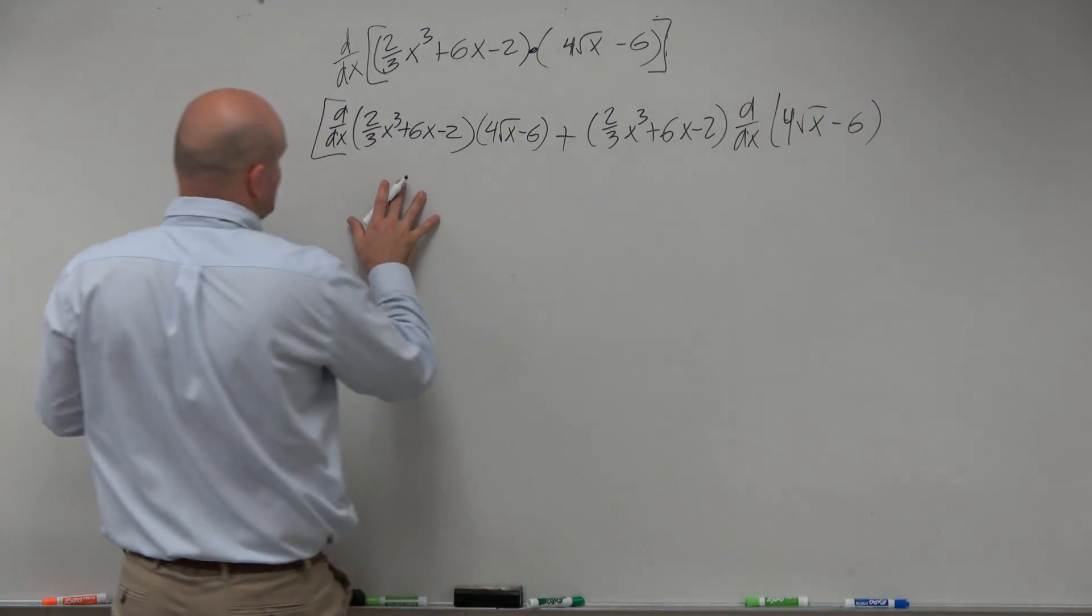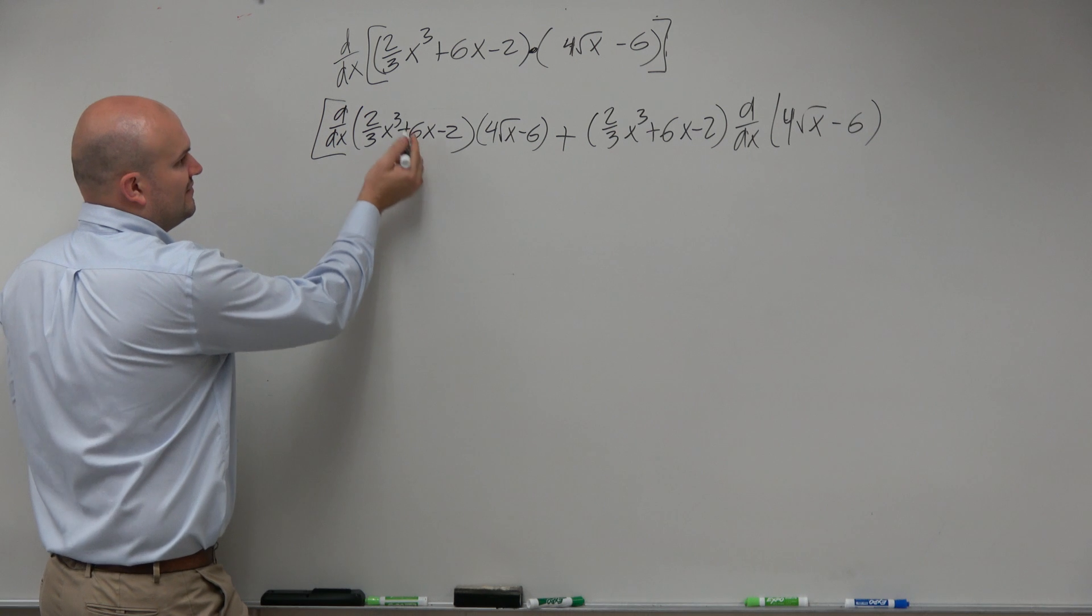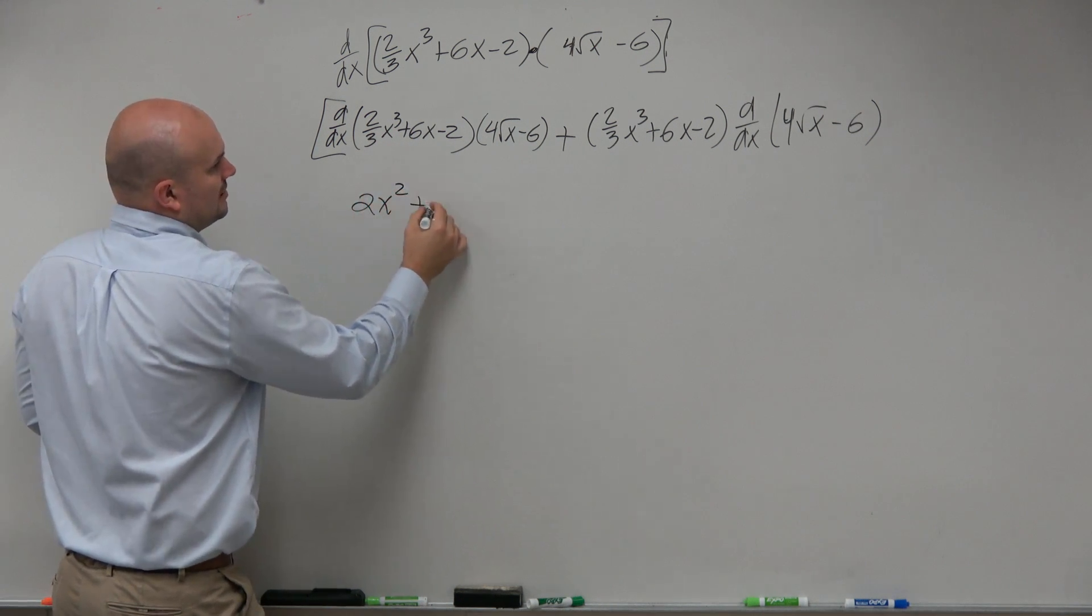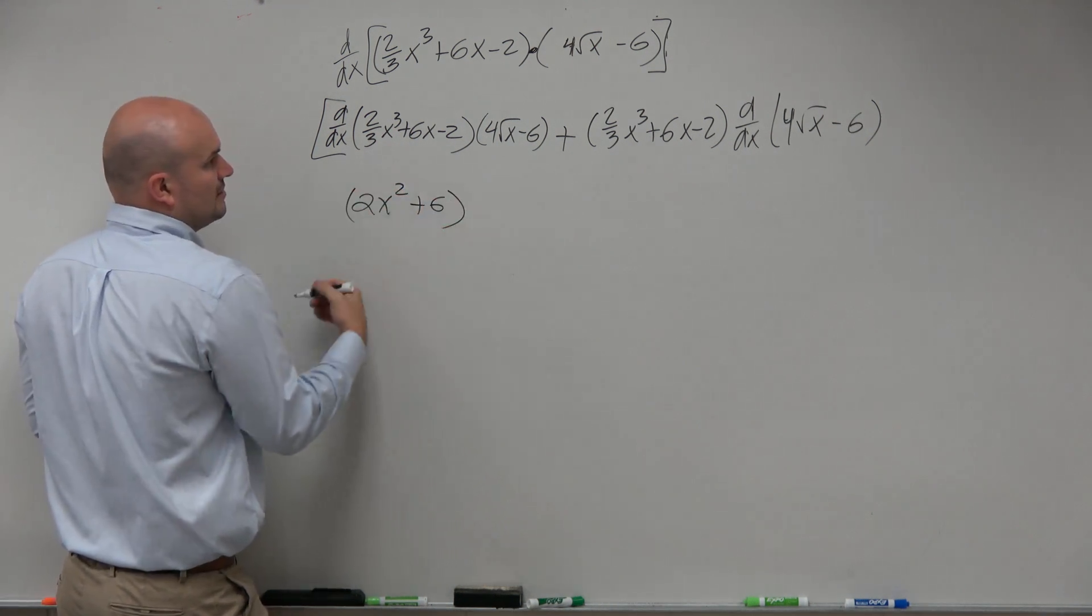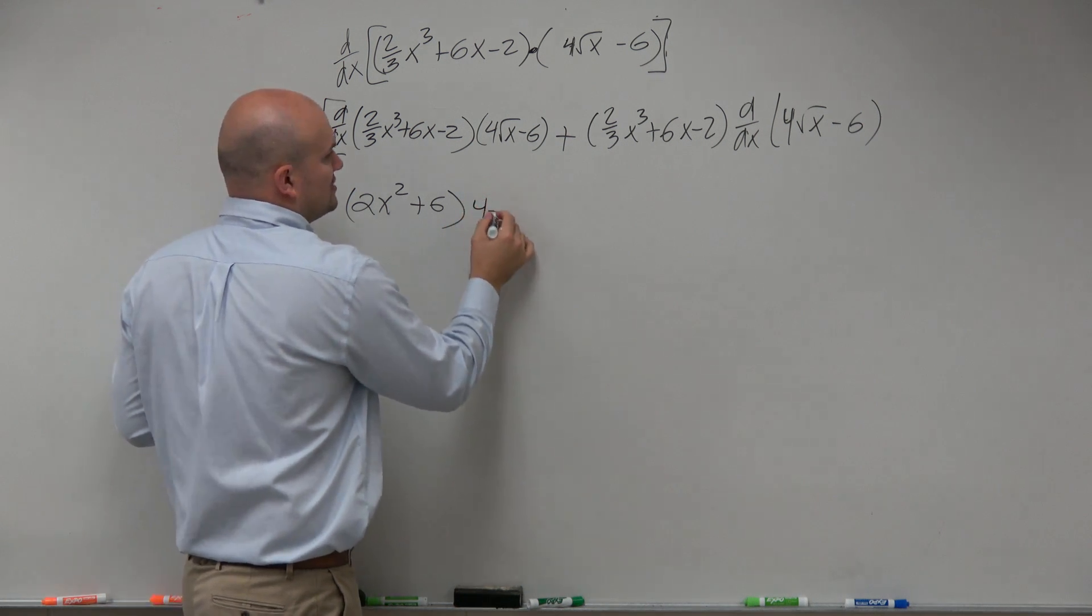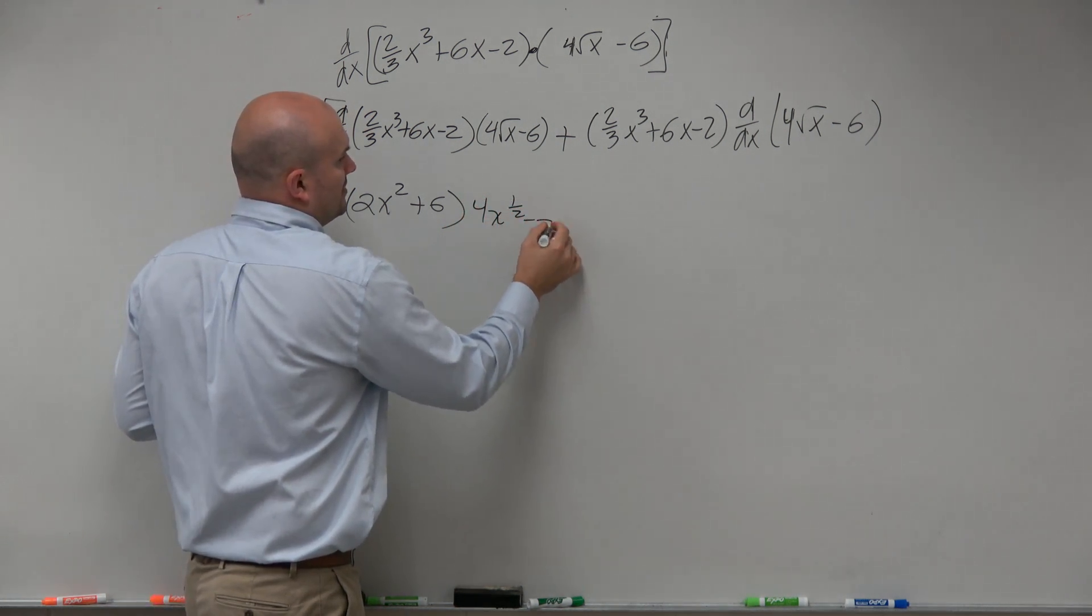So let's go ahead and take the derivative here. When we go ahead and take the derivative, we're going to be left with 2x² + 6 times 4x^(1/2) - 6.